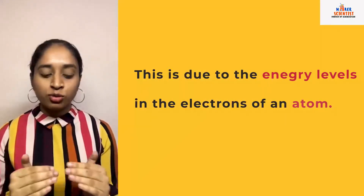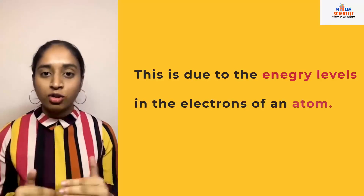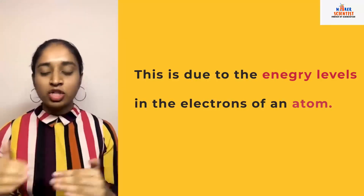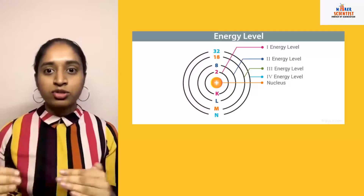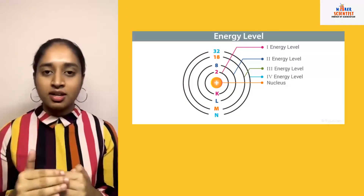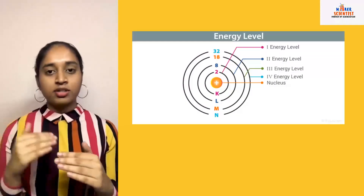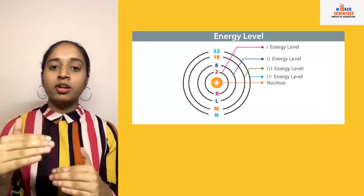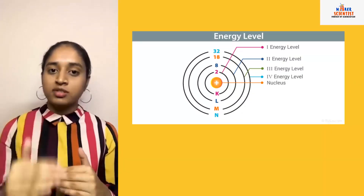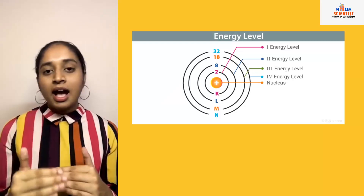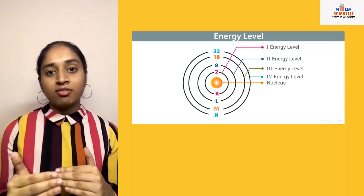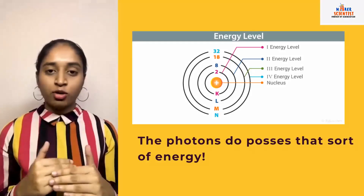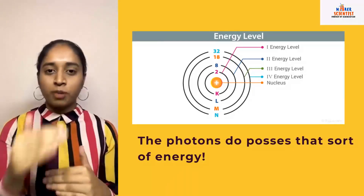This has to do with the energy levels that the electrons in an atom can have. Imagine these energy levels are like the rows of seats in a stadium. An electron is assigned to a particular row, but if it wants to go to the next row, it needs to absorb just that amount of energy. Light photons have that amount of energy which an electron can use to jump to the next row.